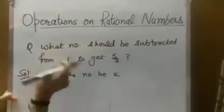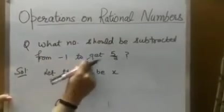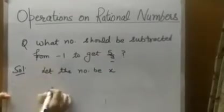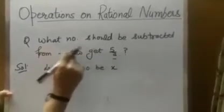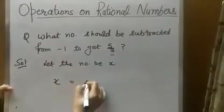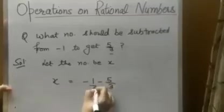What number should be subtracted from 7 to get 4? Now, 7 to get 4. The answer is 3. What we did? We subtract 4 from 7. Minus 1 minus 5 by 3.